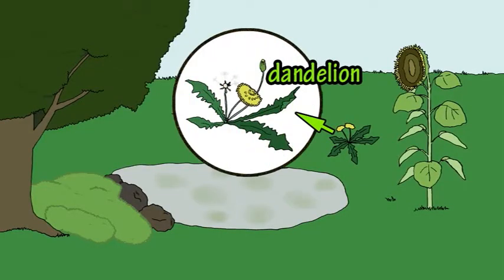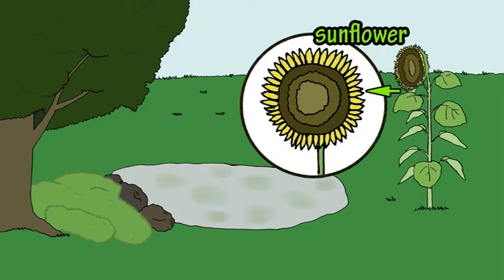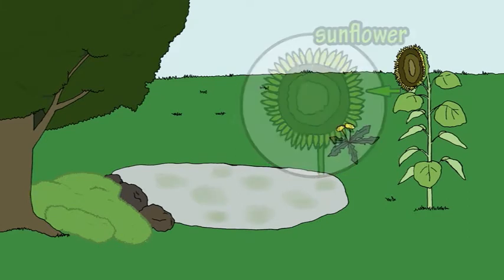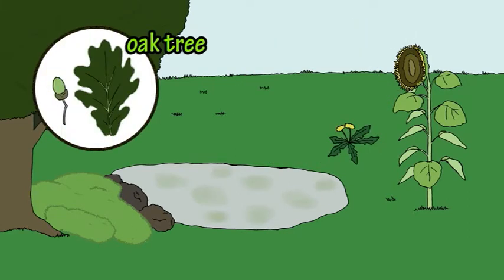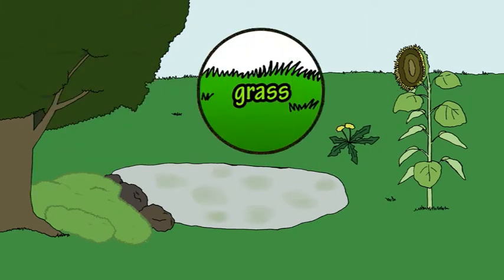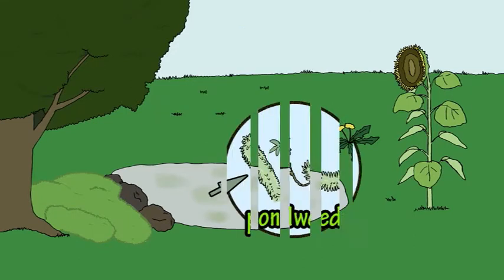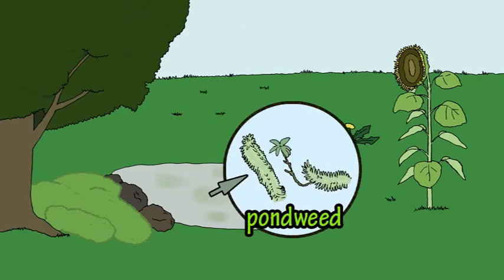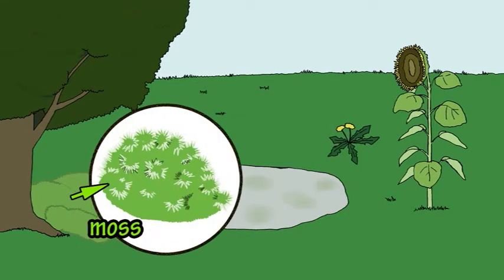A dandelion is a plant. A sunflower is a plant. A tree is a plant. Grass is a plant. Pondweed is a plant. And moss is a plant.